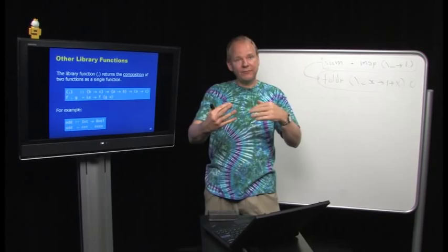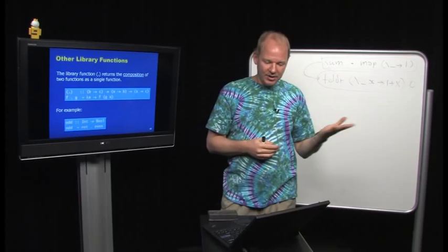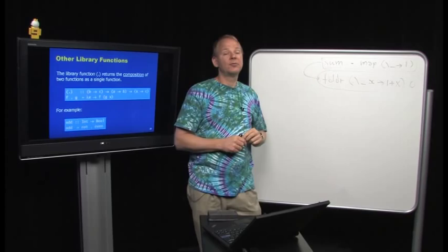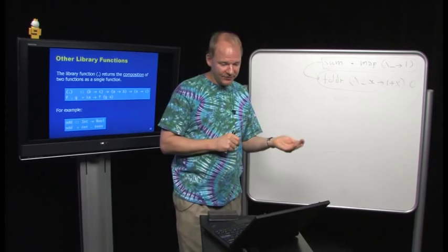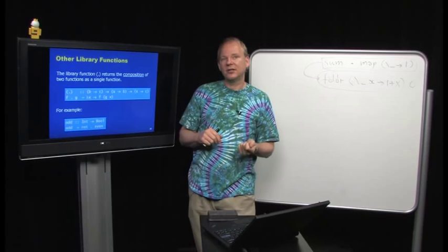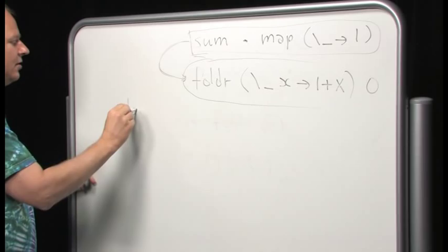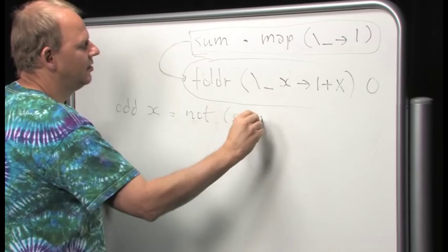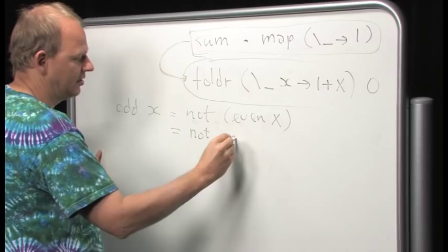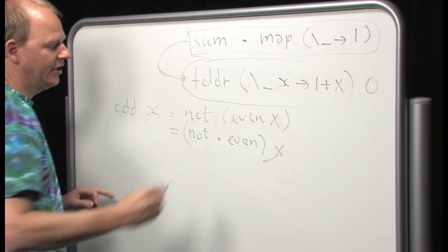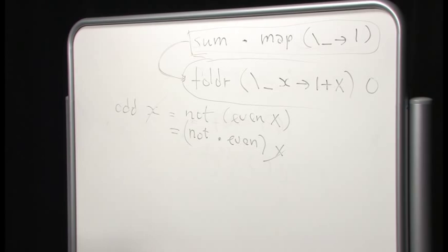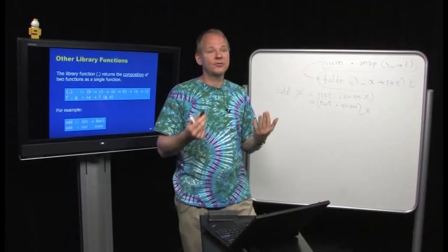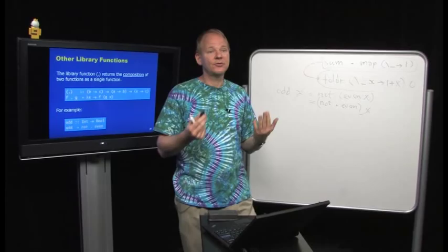Function composition is often used to eliminate arguments. For example, `odd` can be defined as `odd = not . even` instead of `odd x = not (even x)`. This is called point-free notation — you write functions with as few variables as possible. This form makes it much easier to reason about your programs algebraically, something we'll see more in later lectures.